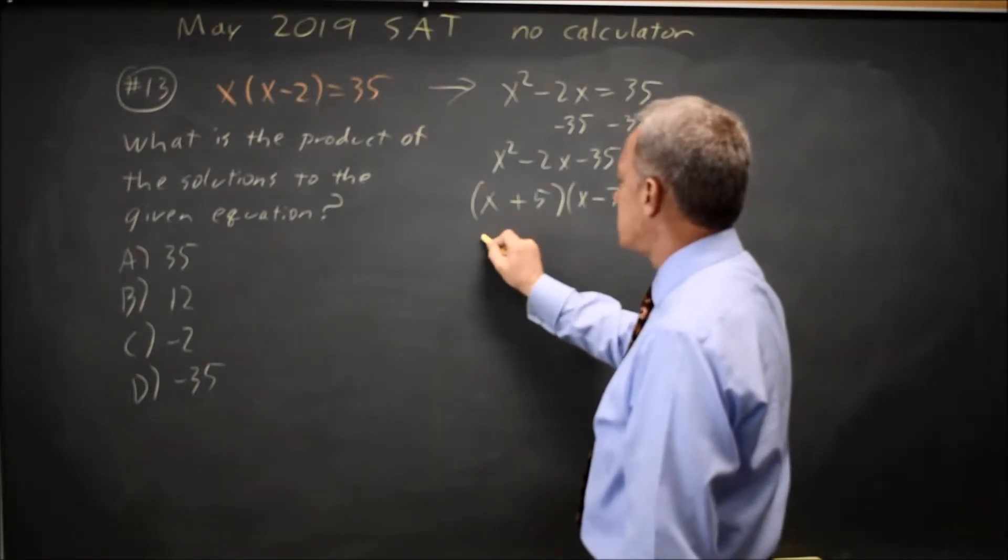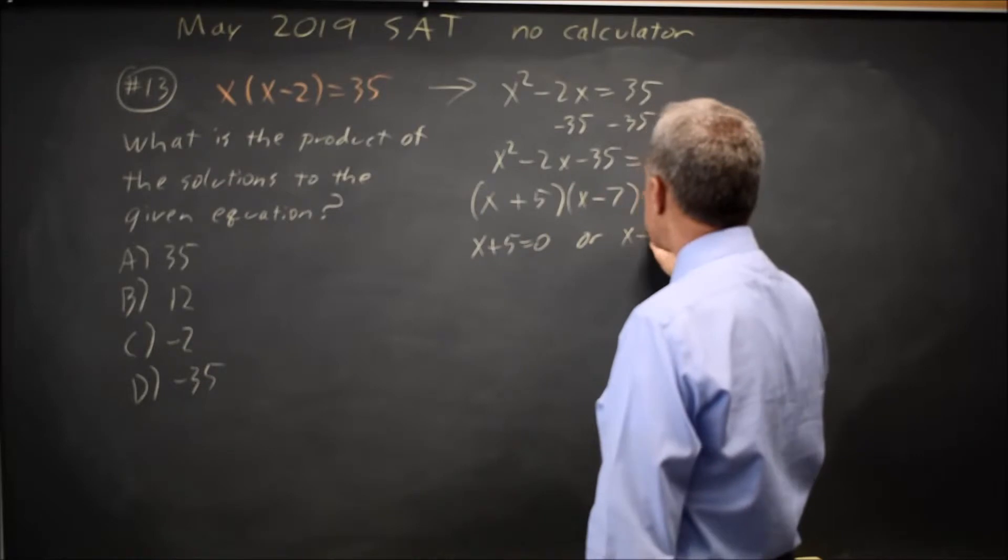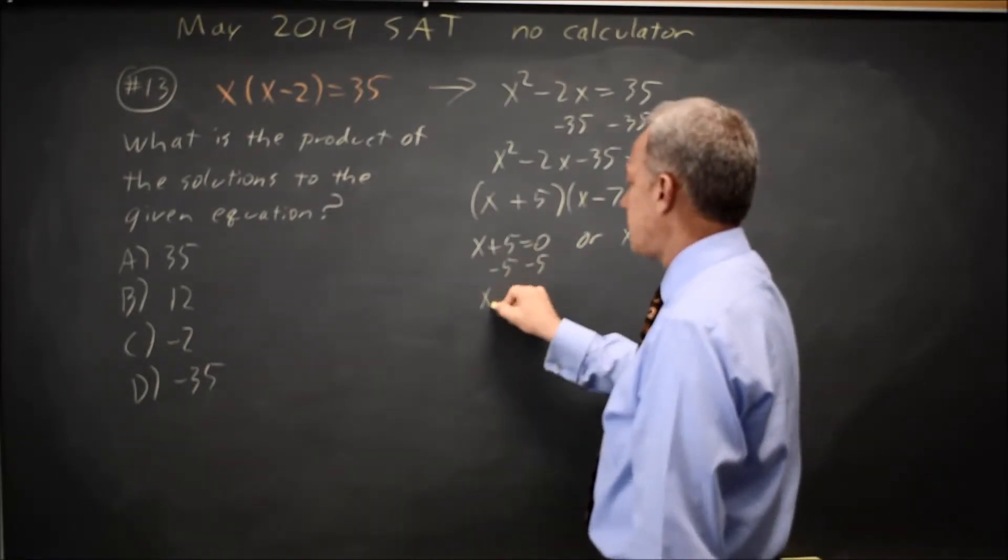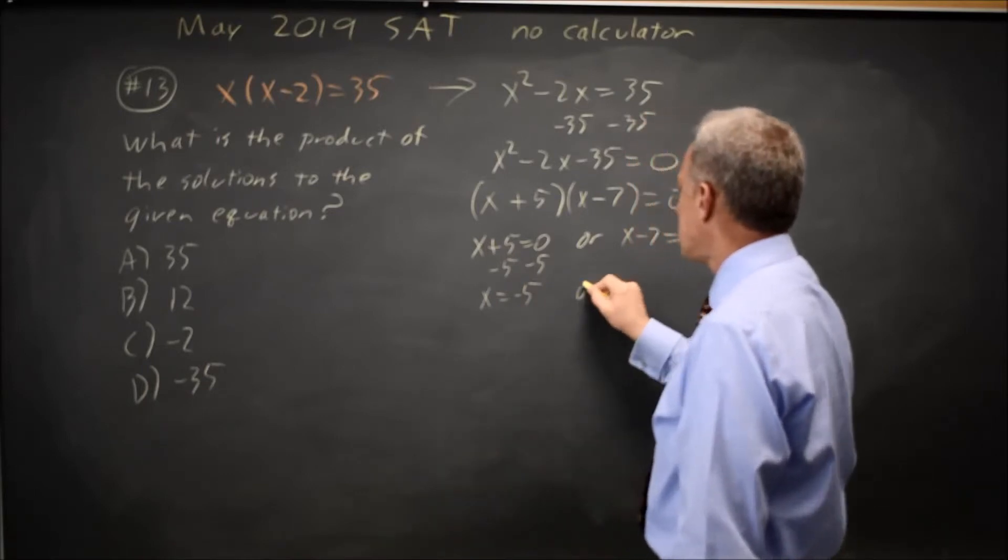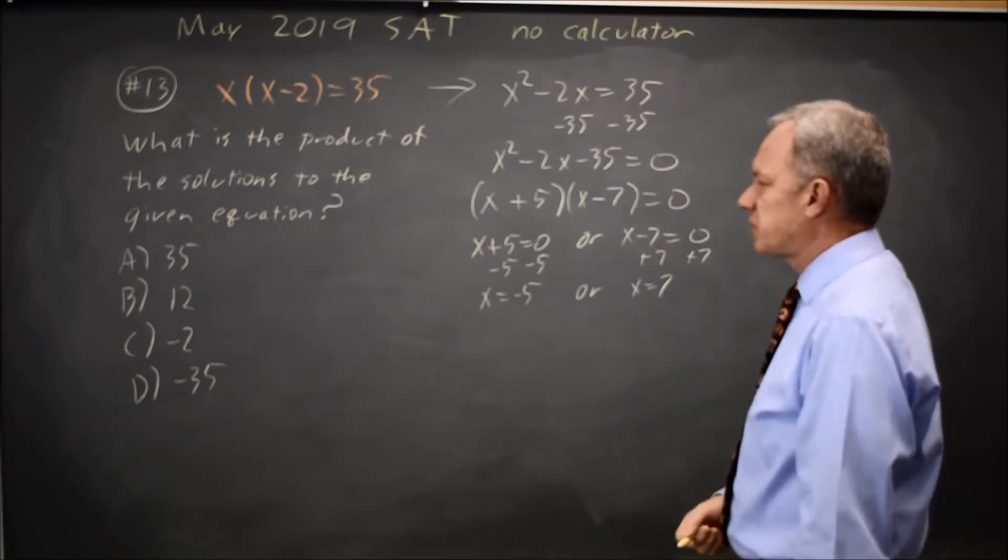Since this product is 0, either x plus 5 equals 0 or x minus 7 equals 0. Subtract 5 from both sides, I get x equals negative 5, or add 7 to both sides, x equals positive 7.